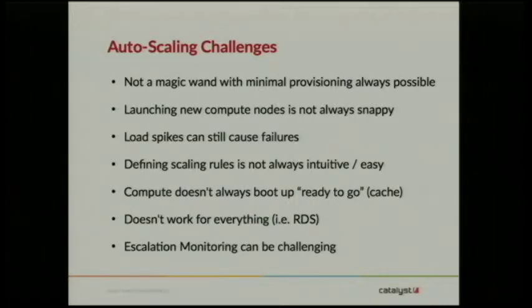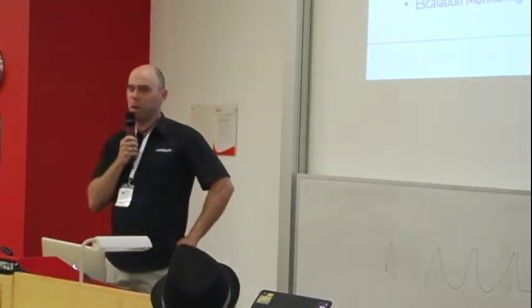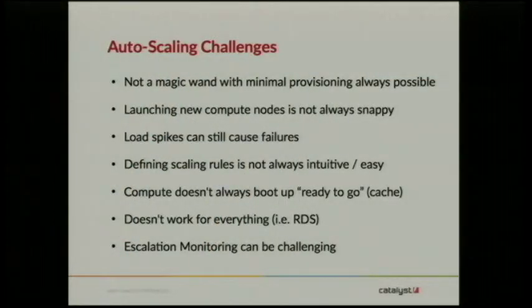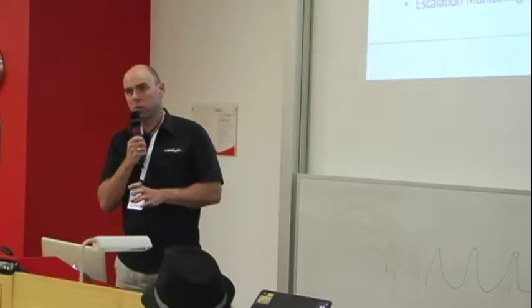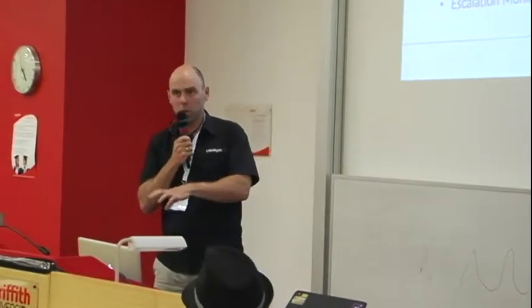A compute node might come with a cold cache and needs to be running for a while before it's fully useful, so getting it right is a bit of a journey. You can't autoscale everything — RDS doesn't work like that. But with immutable front-end machines you can get a lot of mileage out of it. Monitoring of compute nodes within an autoscale group is a little bit new and wacky. Traditionally with Nagios you give machines a name, monitor them, and if they go away you react. Whereas in an autoscale group there might be four or ten machines and you don't really know — and in the instance of machines coming in and out, they will actually be broken.